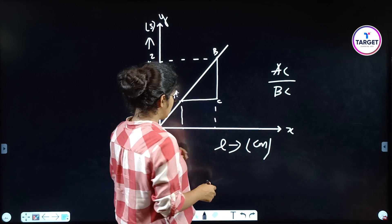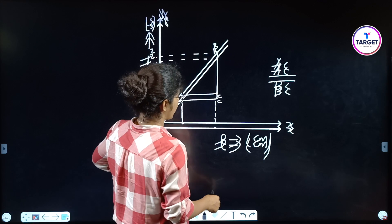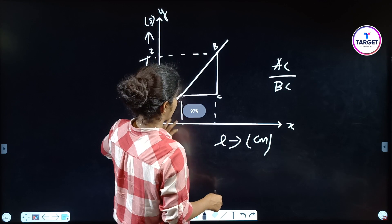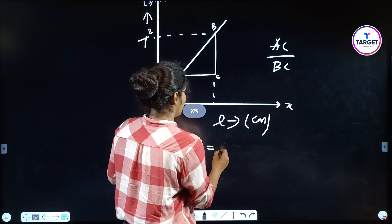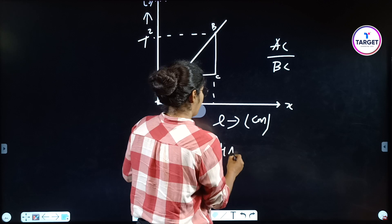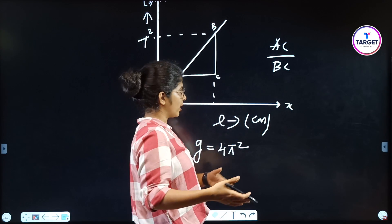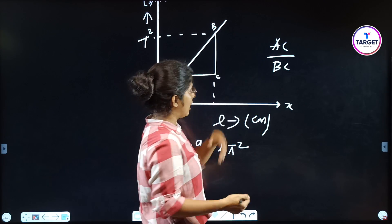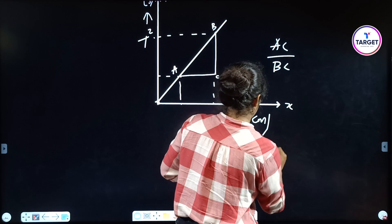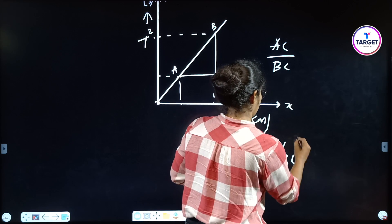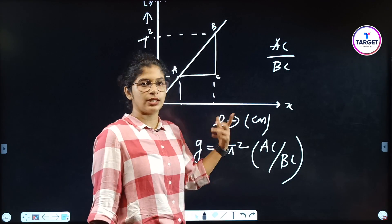So what you have to do is substitute into the equation. What is the equation? G = 4π²L/T². Instead of L/T², substitute the slope value AB/BC from the graph.